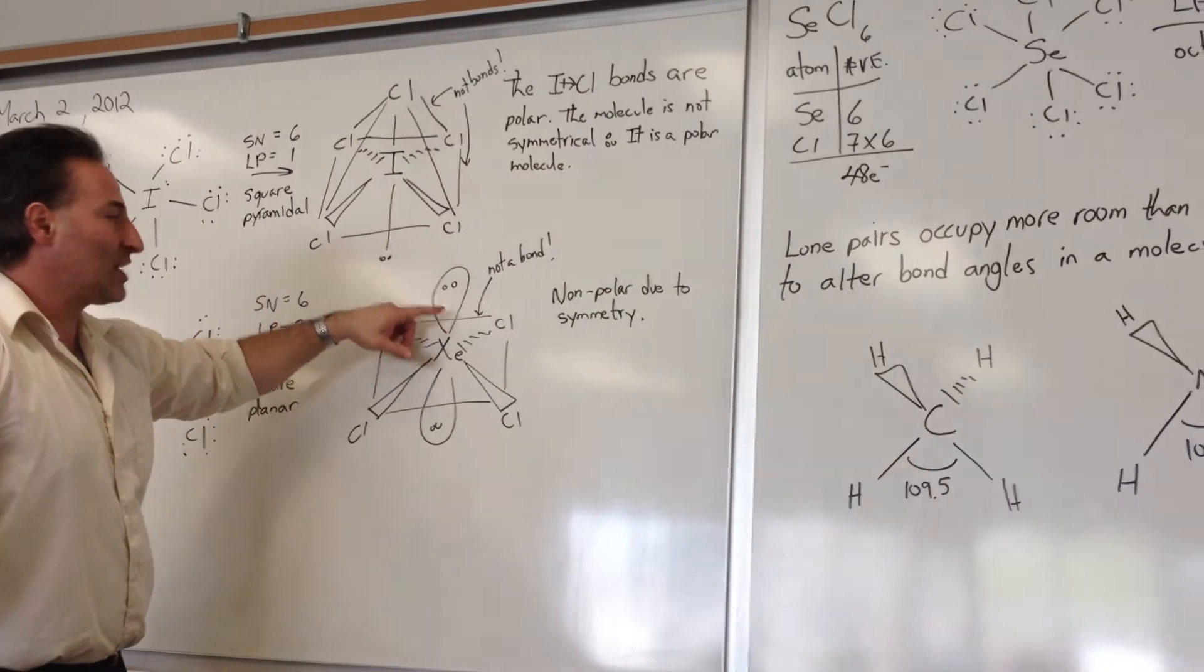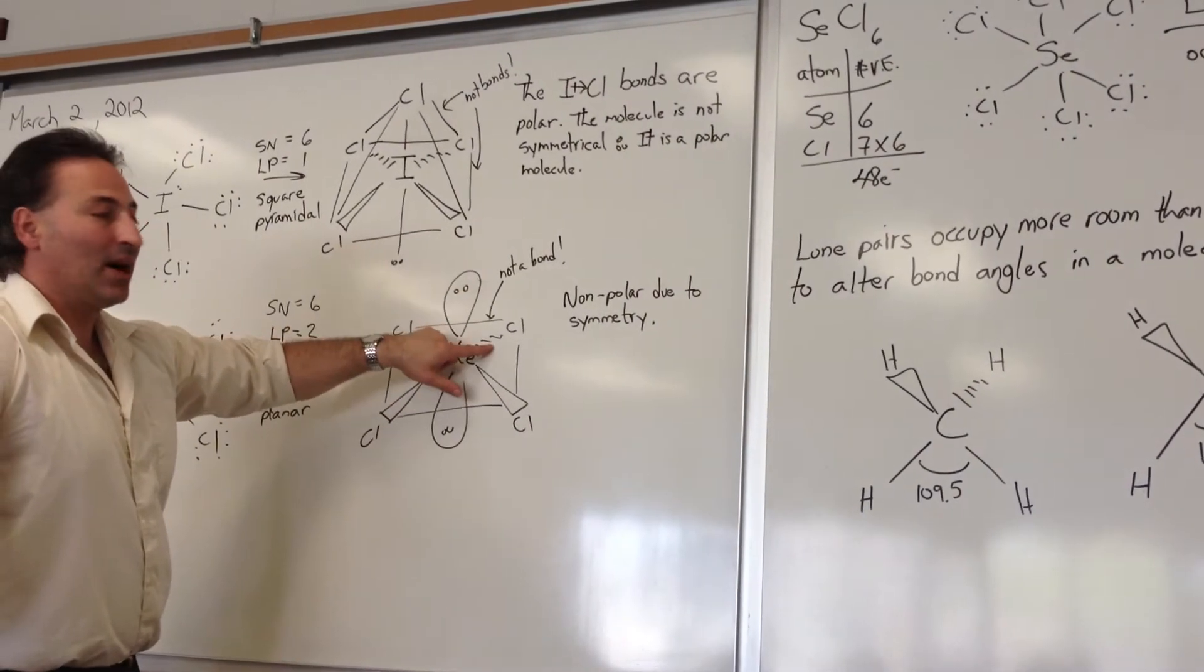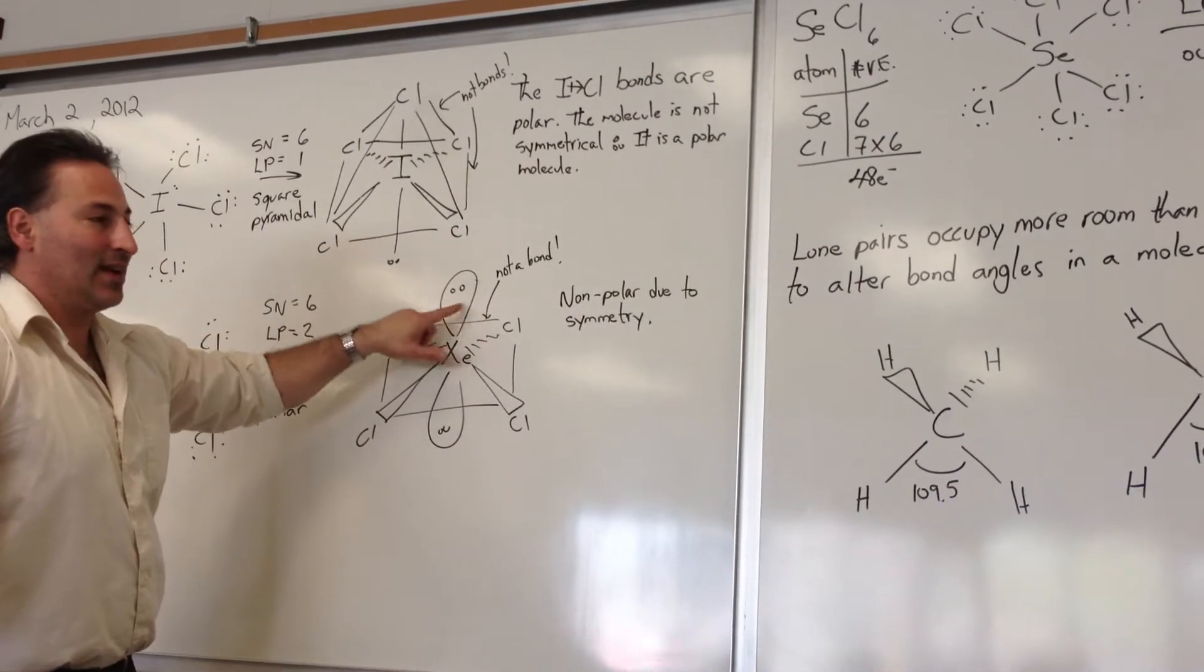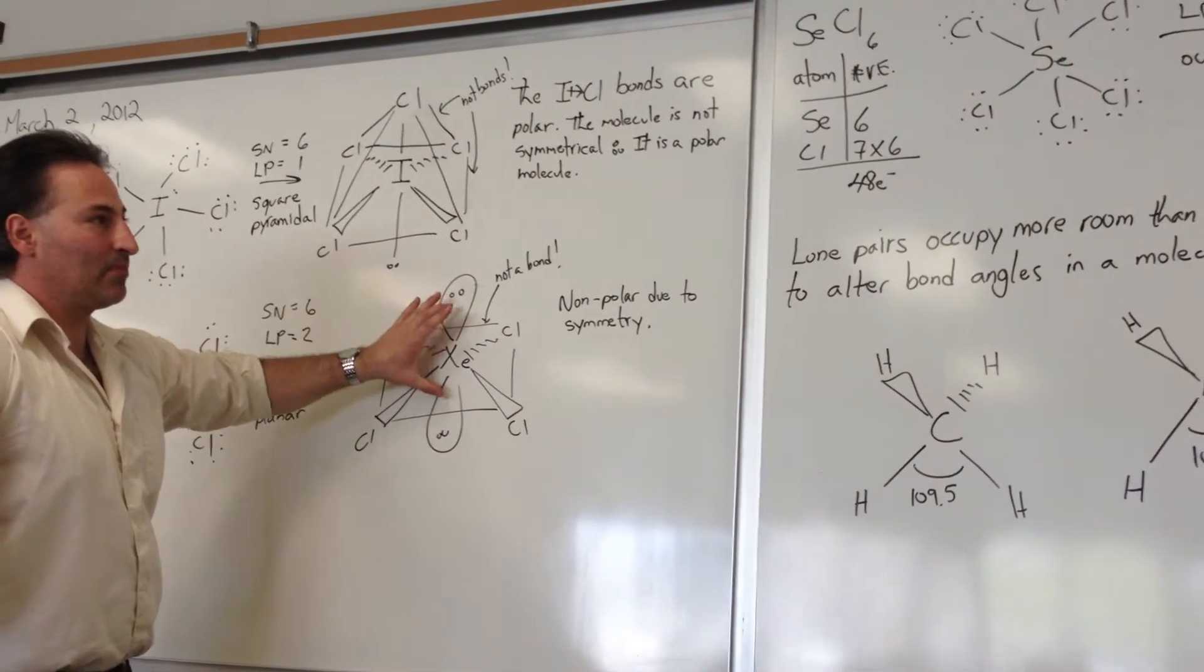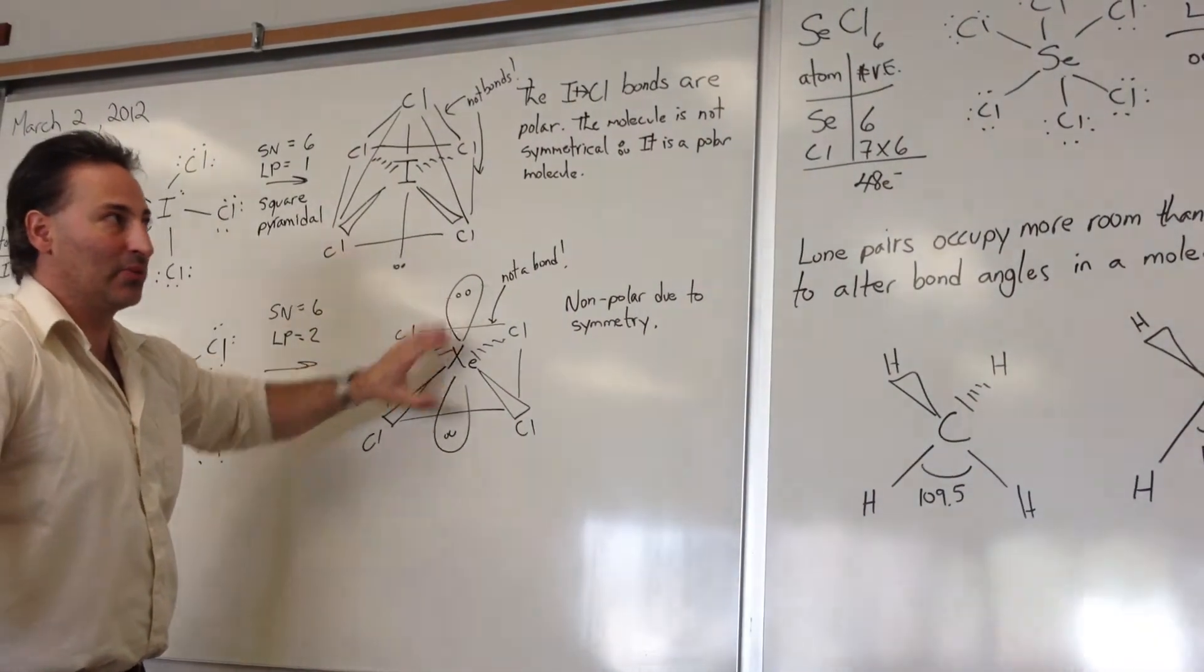And the next level of interaction would be between lone pairs and bonding pairs, and that's at 90 degrees. So the best situation there is to have them as far apart because the criterion is the lone pair-lone pair interaction.